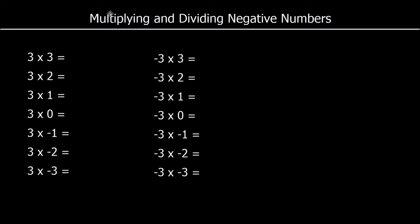Starting with 3 times 3: three 3s, 3 lots of 3 is 9. 3 times 2 is 6, 3 times 1 is 3, and 3 times 0 is 0. You should start to see a pattern — we're going down in 3 every time.